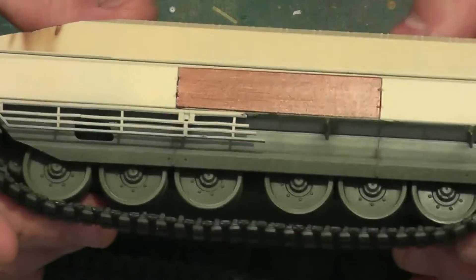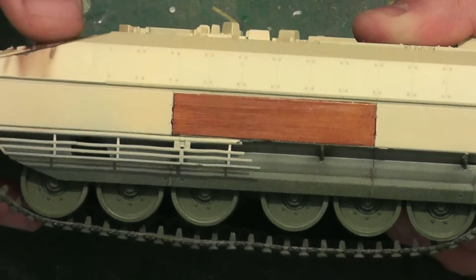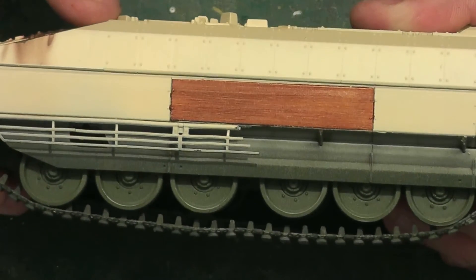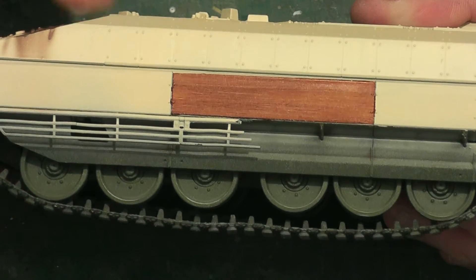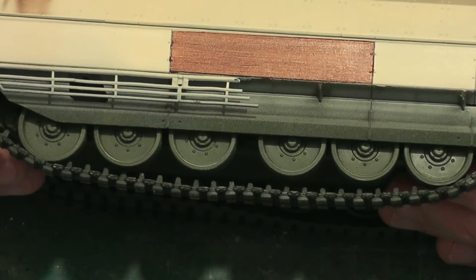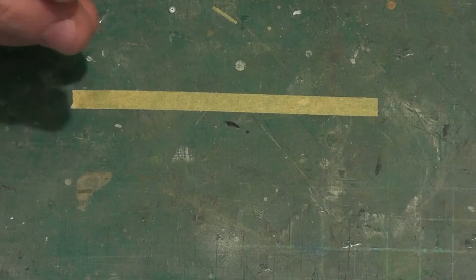So what I want to show you is this effect here that's just taken me about three minutes to do on this test piece, to represent wood grain and stuff on models. I hope you can see that, and I hope you'll agree that it's actually looked very, very good. Now, this is a very simple process that I'm going to share with you.